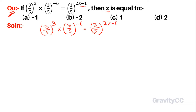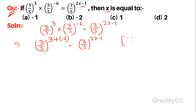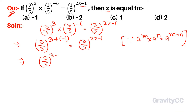In 2x minus 1, since the bases are the same, the powers will add: 3 plus minus 6. So (3/5)^3 multiplied by (3/5)^(-6) equals (3/5)^(2x-1). Using the law a^m × a^n = a^(m+n), we get (3/5)^(3-6) equals (3/5)^(2x-1).